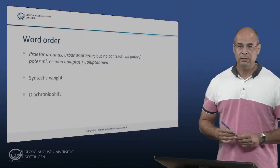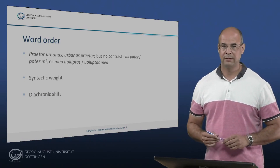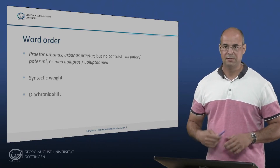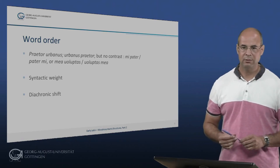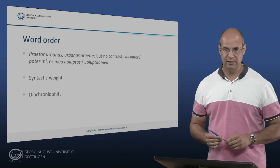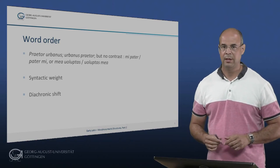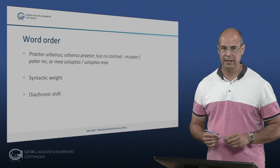An important question is that of the position of the head noun with respect to its dependents. Diachronically, there is a clear development insofar as the earlier the Latin, the more we find pre-nominal dependence. In later Latin, more and more of them become post-nominal, but these are tendencies. In early Latin and also in the classical period, there is no clear preference for the order dependent-noun or noun-dependent.